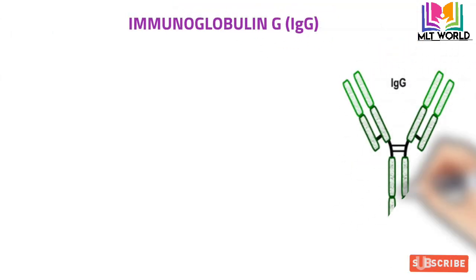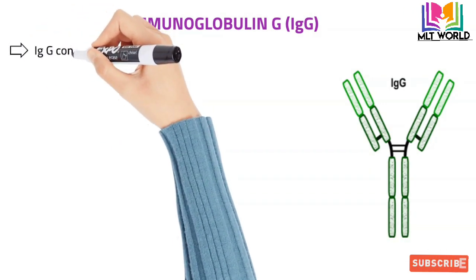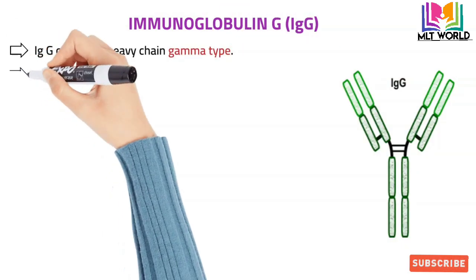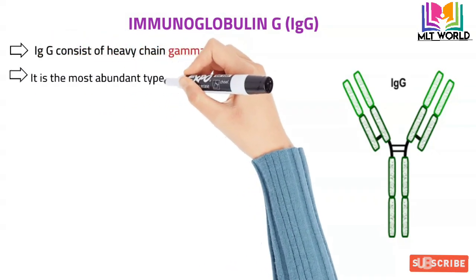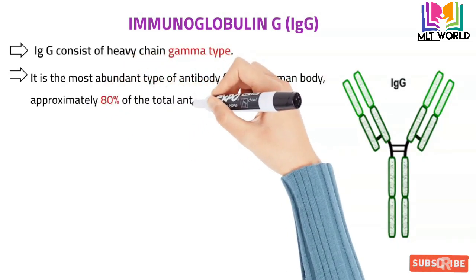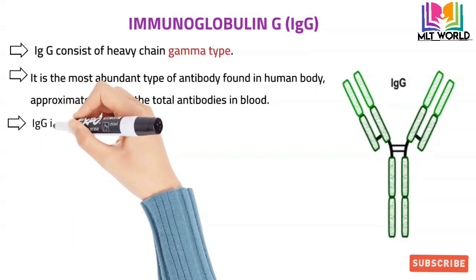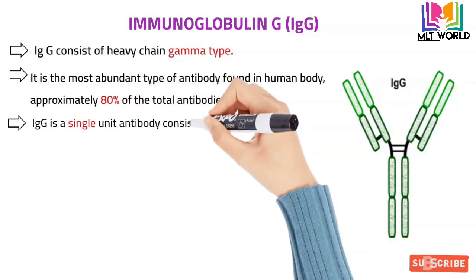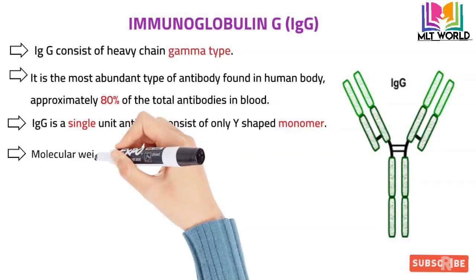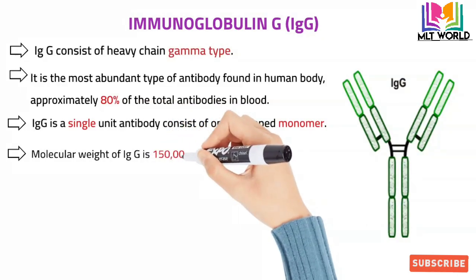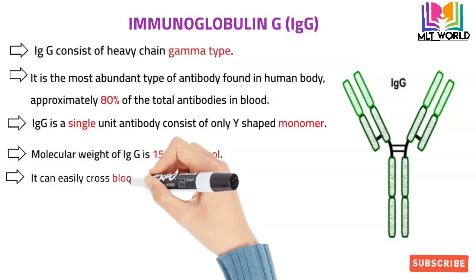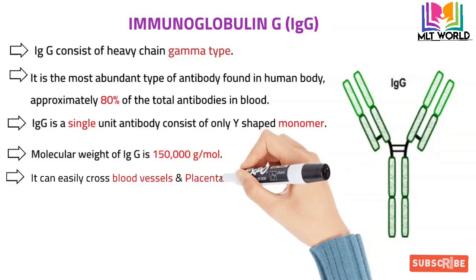First we will discuss Immunoglobulin G, also called IgG. IgG is a single-unit antibody and is the most abundant antibody found in our blood. The heavy chain present in IgG is the gamma type. Almost 80% of total antibodies are IgG. It is a Y-shaped monomer, and its molecular weight is 150,000 grams per mole, making it one of the smallest immunoglobulins.